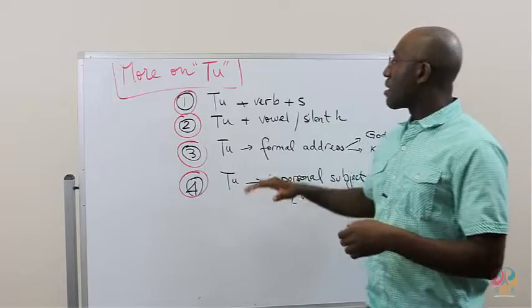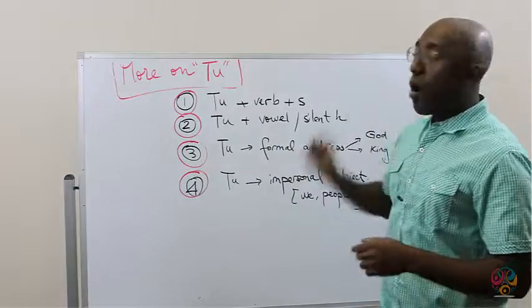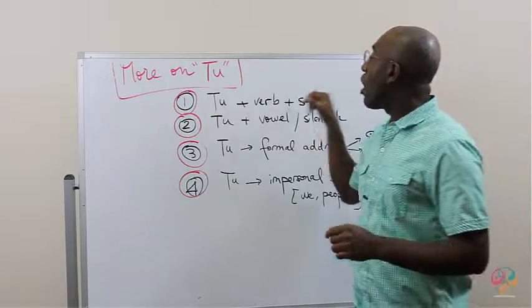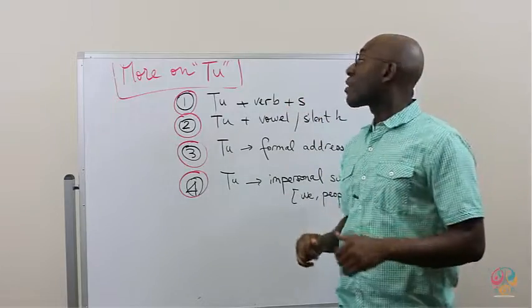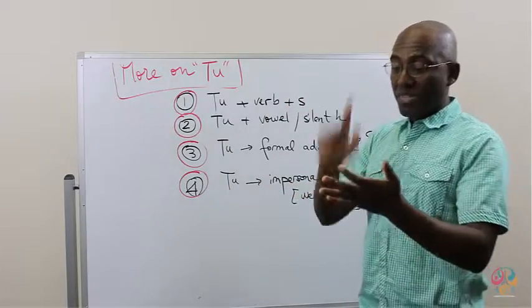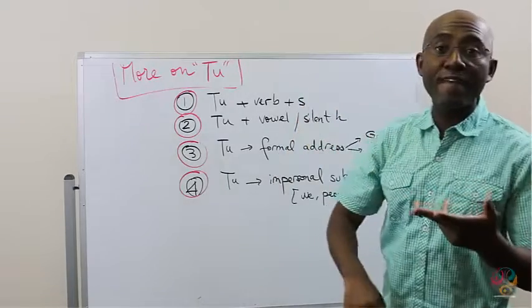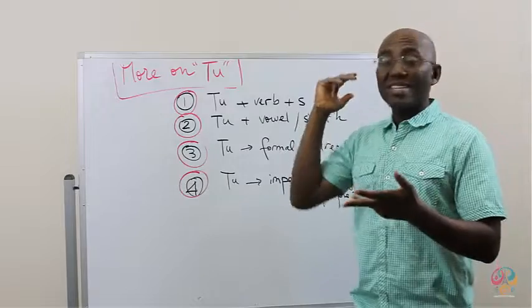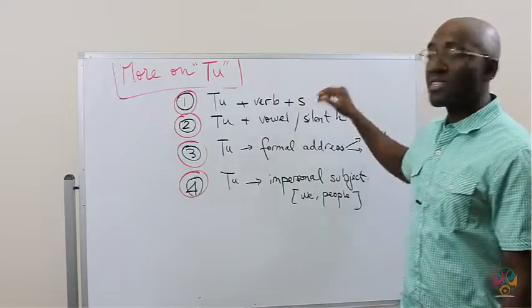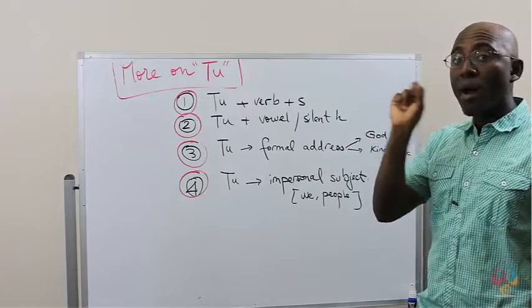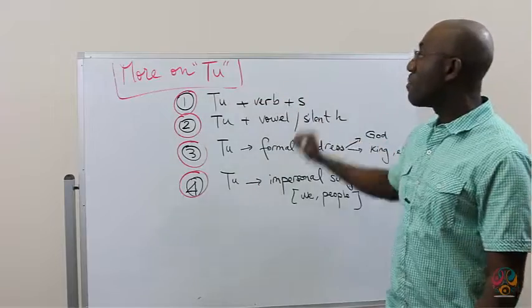One of them is this. Do you know that all verbs that you will conjugate with TU will always take an S at the end, regardless of the tense? Whether you conjugate a verb in the present tense, in the future tense, in the imparfait, in the passé simple, etc., you will have to put an S at the end of the verb. This is the typical mark of TU when it is used with a verb.